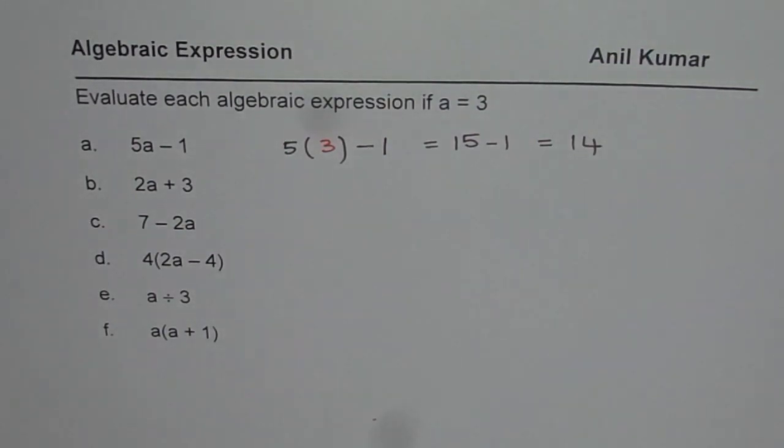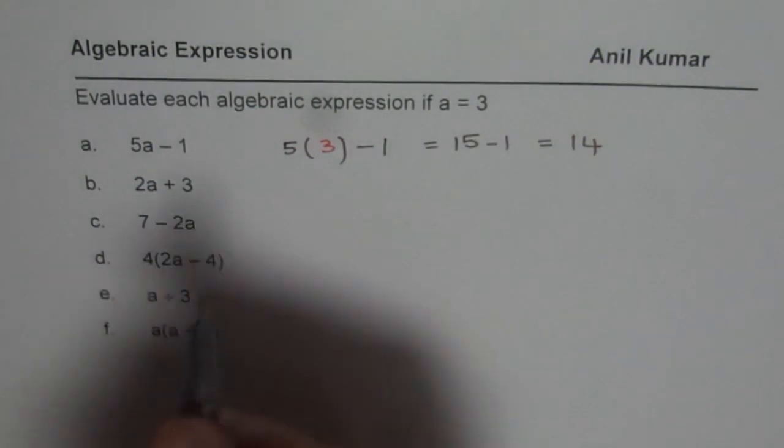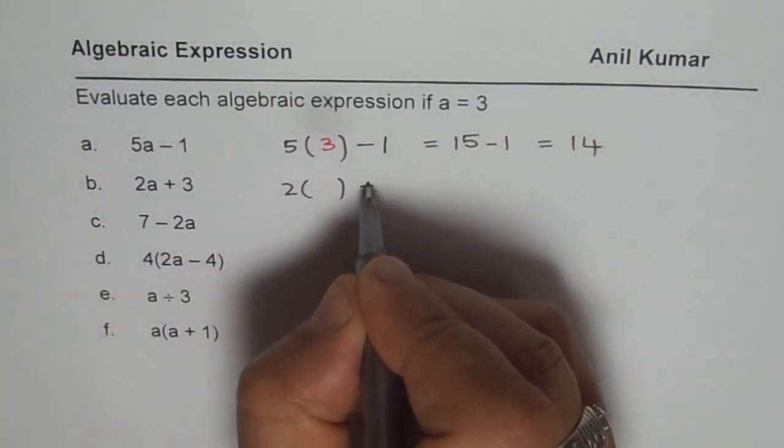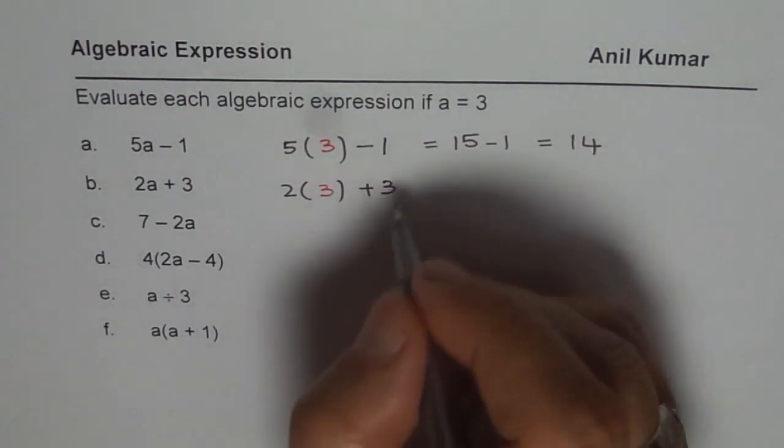That is how you should evaluate algebraic expressions. You can still pause the video, do the rest, and check with my solution. Let's do them one by one. 2a plus 3 means two times a, where we substitute the value of a, then add 3. a is given as 3.